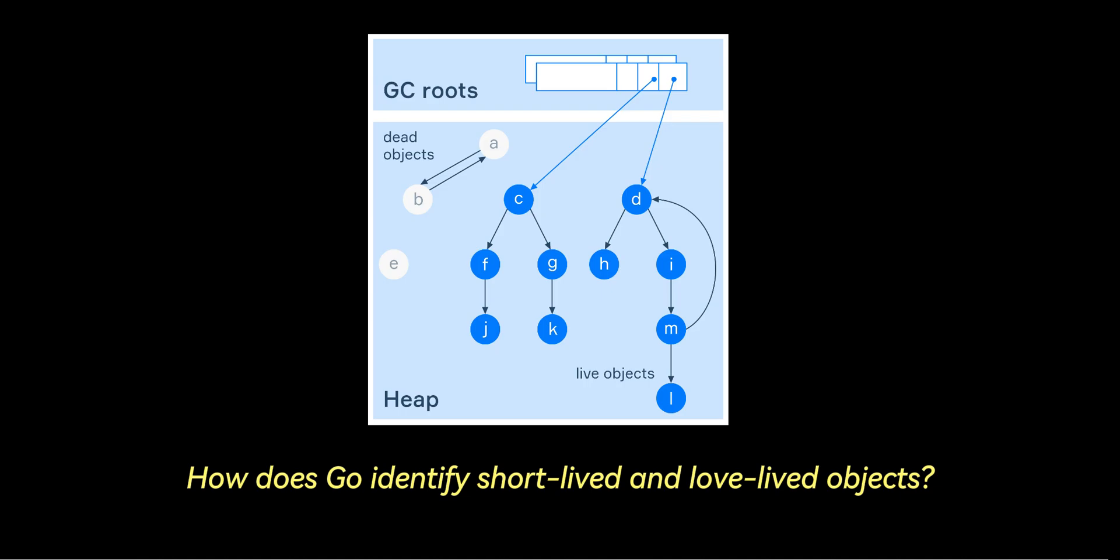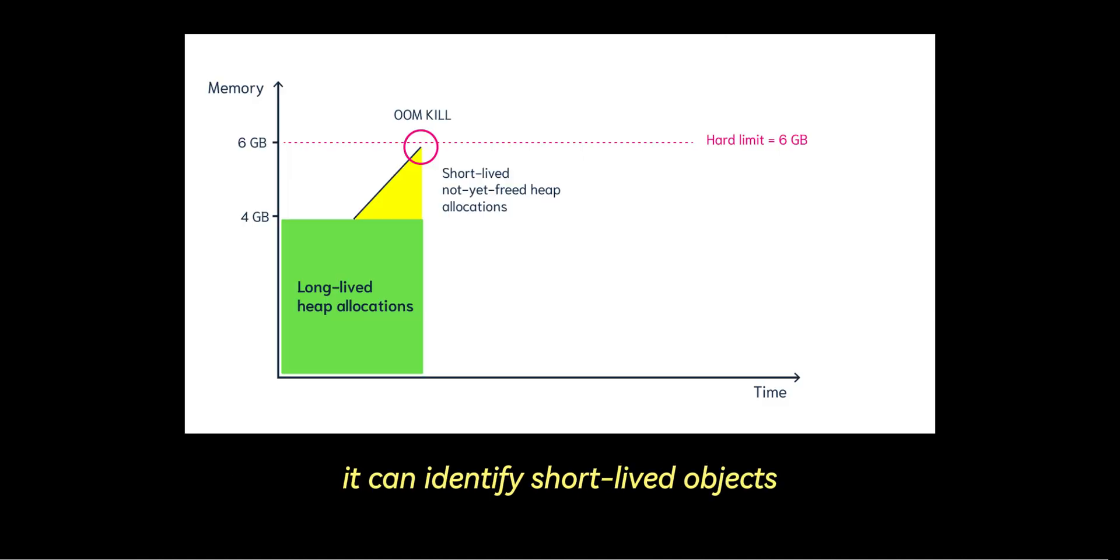How does Go identify short-lived and long-lived objects? While Go doesn't divide objects into explicit generations like young and old, it can identify short-lived objects through the natural structure of Go programs. When a function completes, all local variables in that function's scope are unreachable if they were only used in that function. Go knows to treat these objects as short-lived because they go out of scope quickly.